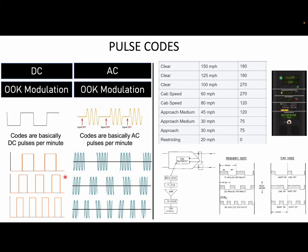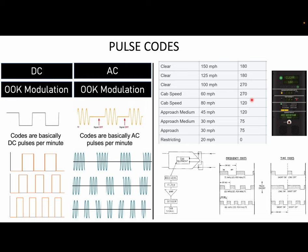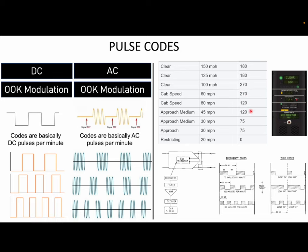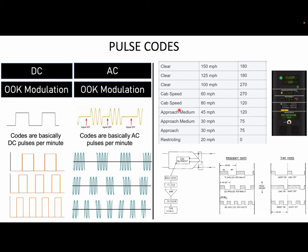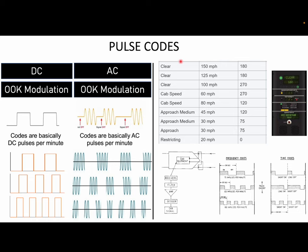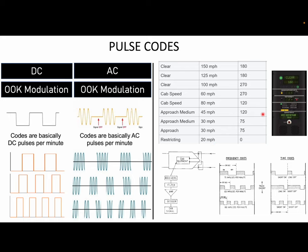As you go up — 75, 120, 180, 270 pulses per minute — every pulses-per-minute value means a different code. Code 120 means 120 pulses per minute, 270 means 270 pulses per minute, and each of these is received by the cab equipment. The equipment interprets that information as a specific speed and aspect, which then shows on the driver display — telling you the speed and the aspect. There are different variations of this display, but this is essentially how pulse codes work.